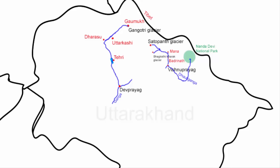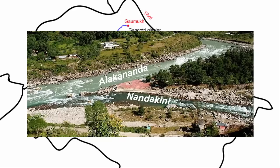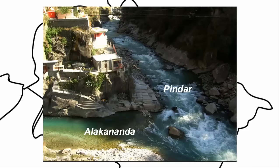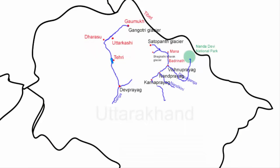From Vishnuprayag, the Alakananda river flows southwest for about 40 kilometers and reaches the town of Nandaprayag — this is the second of the Panchprayag, where the Nandagini river joins the Alakananda. From Nandaprayag the Alakananda continues southwest, and in about 15 kilometers it reaches the town of Karnaprayag, where the Pindar river joins the Alakananda — the third place of the Panchprayag.